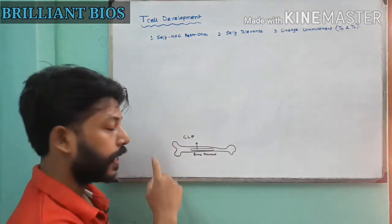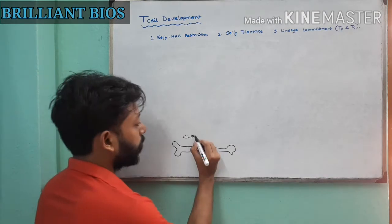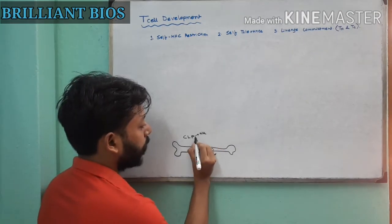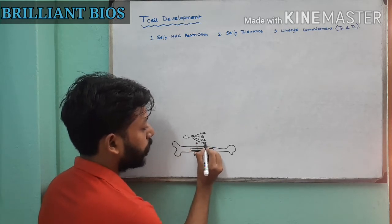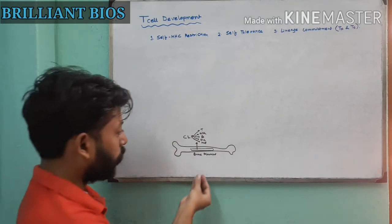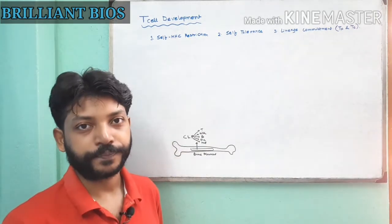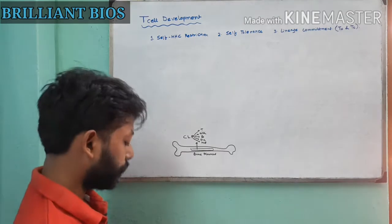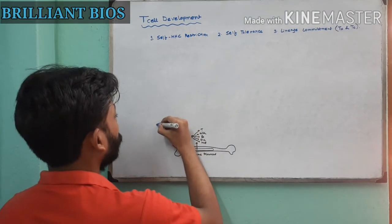From this bone marrow, one type of cell comes out called the common lymphoid precursor cell. This cell is not committed yet — it can generate NK cells, B cells, dendritic cells, even myeloid cells like macrophages, and T cells. So the cells that come out from the bone marrow are not yet committed.